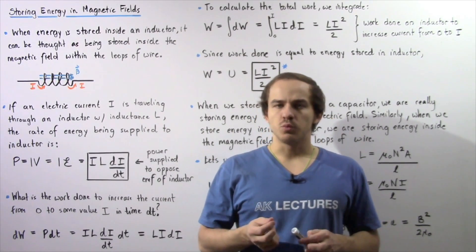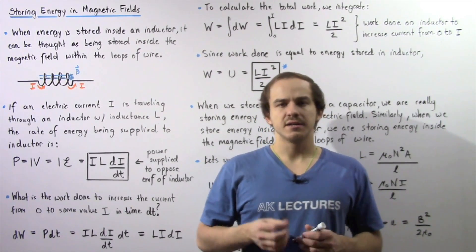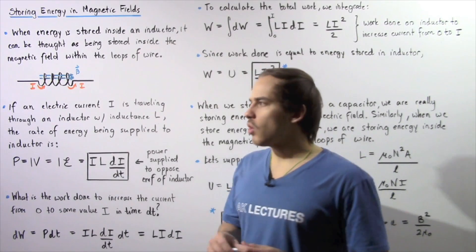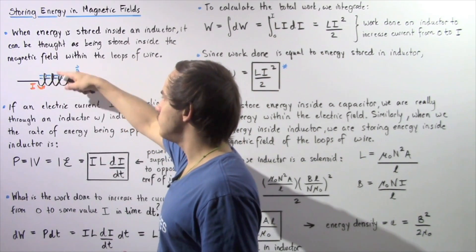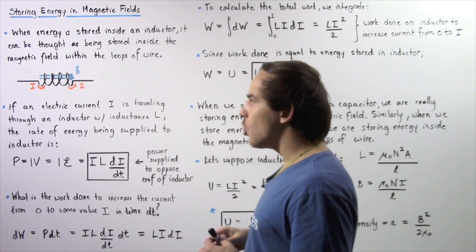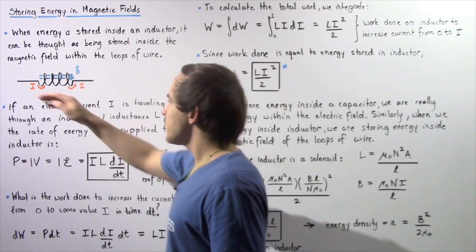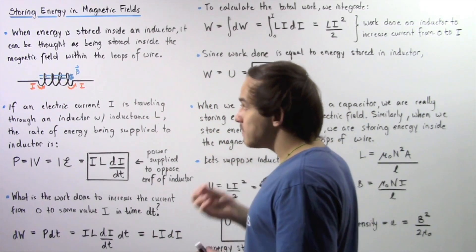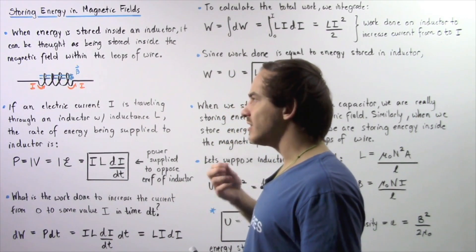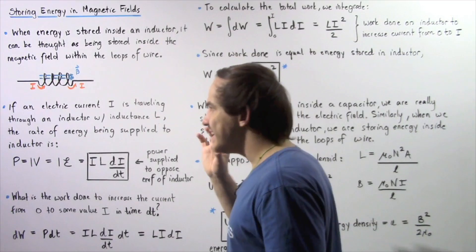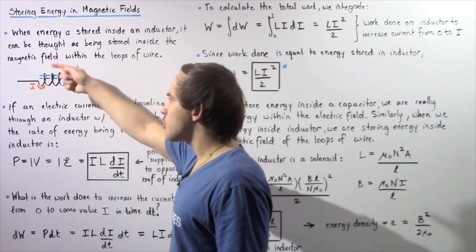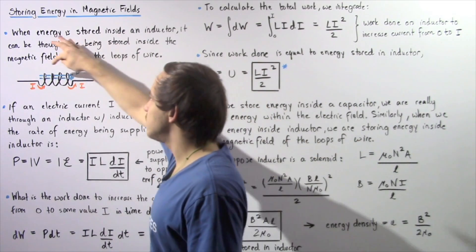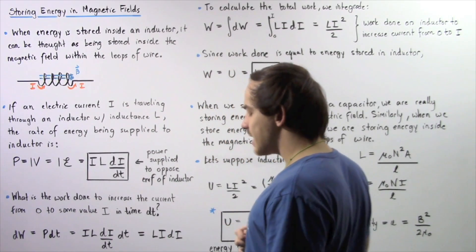In the same exact way that energy is stored within the electric field inside a capacitor, energy is stored within the magnetic field inside an inductor. Suppose we have an inductor consisting of loops of wire, and an alternating electric current I is traveling from left to right. At some given moment in time, suppose the electric current is increasing. An increasing electric current traveling through the loops will create an increasing magnetic field inside the loops of wire.